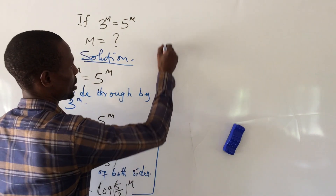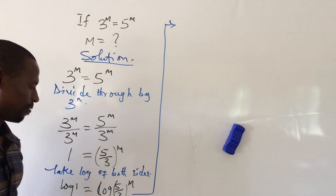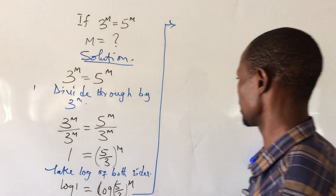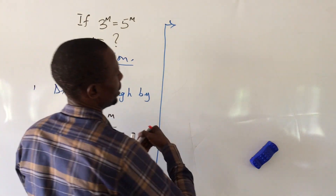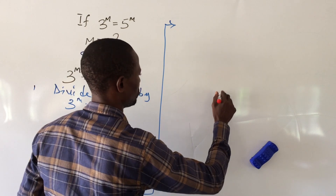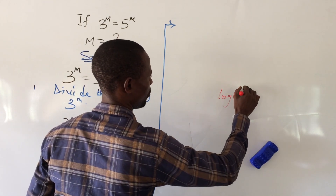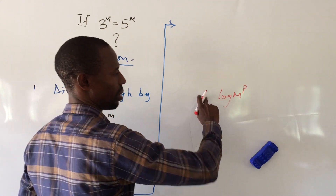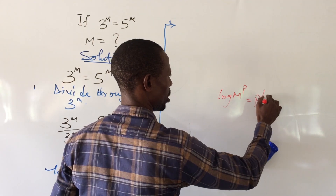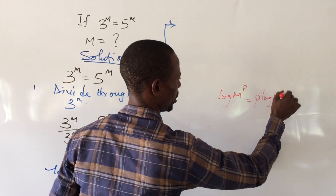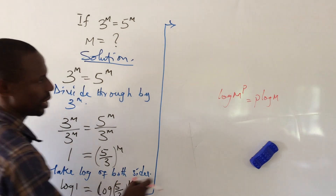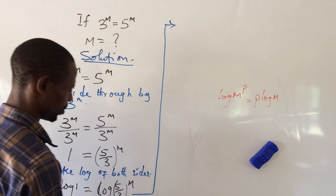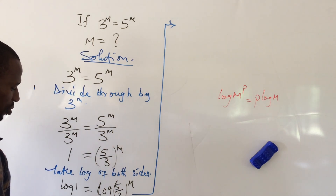Before we proceed, let's look at some laws of logarithm. There is a law which states that if you have log m to the power of p, then you can bring the power down, giving us p times log m. So our p is m and our argument is 5 over 3.